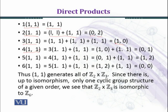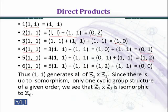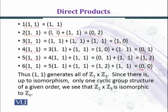Adding (1,1) four times gives (0,1). Adding (1,1) five times: first coordinate 5 mod 2 = 1, second coordinate 5 mod 3 = 2, giving (1,2). Adding (1,1) six times: first coordinate 6 mod 2 = 0, second coordinate 6 mod 3 = 0, giving the identity element (0,0). So the order of (1,1) is 6, and (1,1) completely generates the group Z₂ × Z₃.